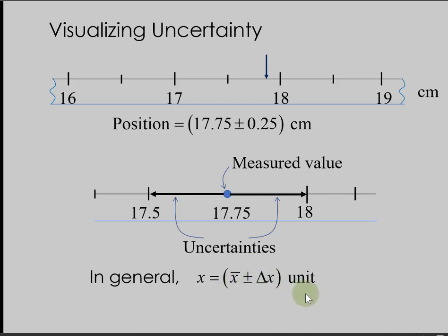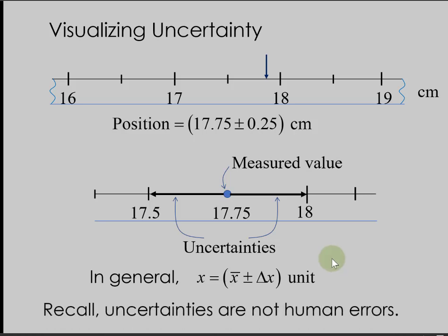Remember that this uncertainty did not come from our mistake in reading. It simply depends on the resolution of the device. That's why uncertainties are not human errors. If you think they are human errors, go ahead, retake the reading, and correct your measurement. Happy learning!